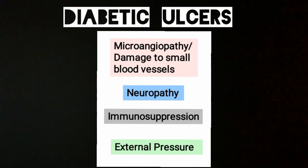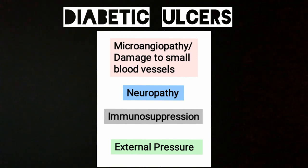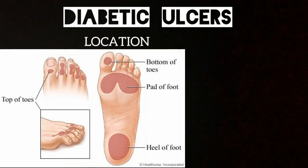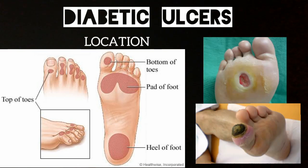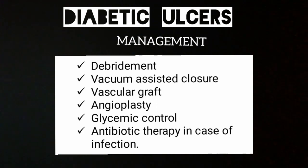External pressure will initially cause injury — for example, hard footwear can increase pressure in an area — and then immunosuppression and all these factors lead to the severity of the ulcer. The most common locations for diabetic ulcers are the tip of toes, bottom of toes, pad of foot, and heel of foot. For treatment, we can use the same methods as before: debridement, vacuum-assisted closure, vascular graft, angioplasty. Glycemic control is also very important, and antibiotic therapy is used in case of infection.